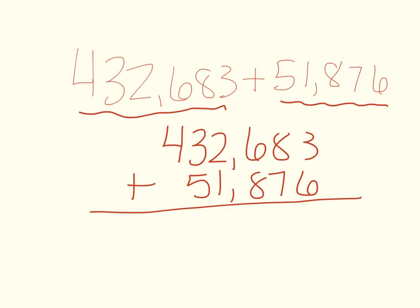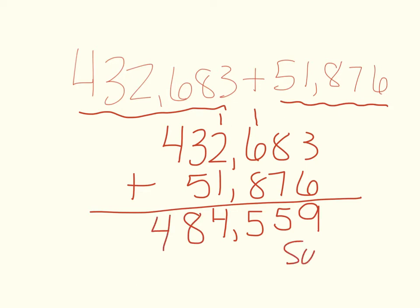So let's go ahead and do this addition. Three plus six is nine. Eight plus seven is fifteen, so we put the five in the ones place and regroup the one to the hundreds place. One plus six is seven. Seven plus eight is fifteen — same thing, we need to regroup to the thousands place. One plus two is three. Three plus one is four. We can't forget to put our comma. We don't need to regroup here, and three plus five is eight, and four plus zero is four. So our sum — which is the answer to an addition problem — is 484,559.